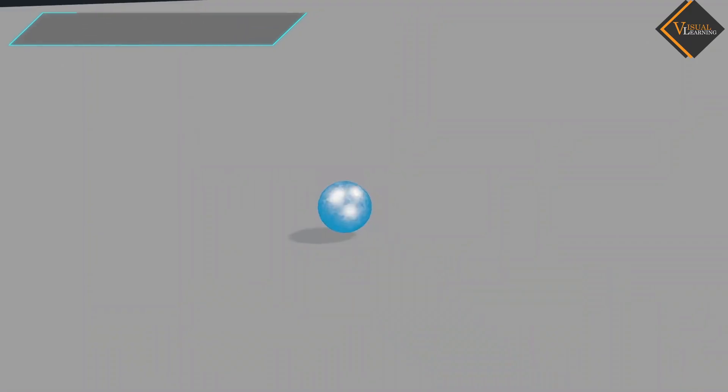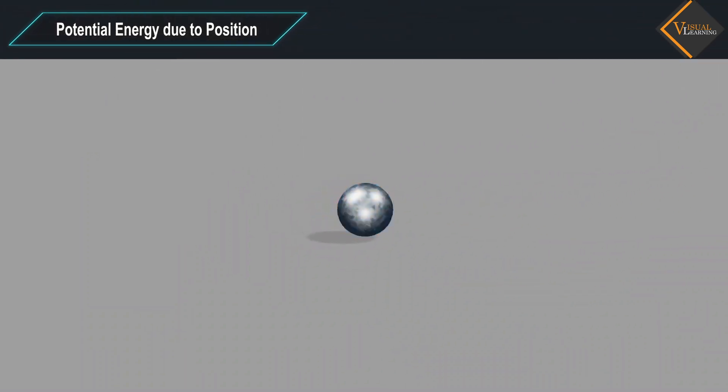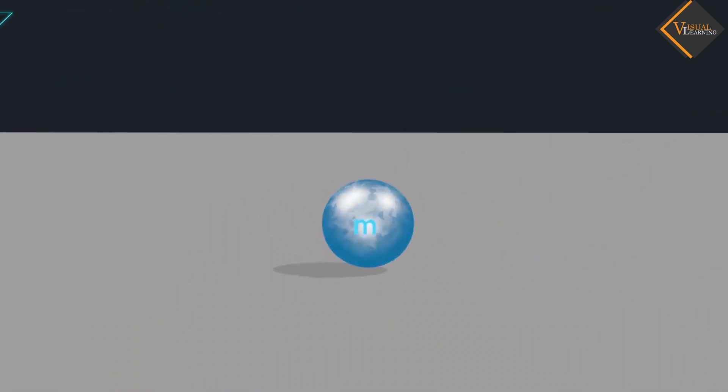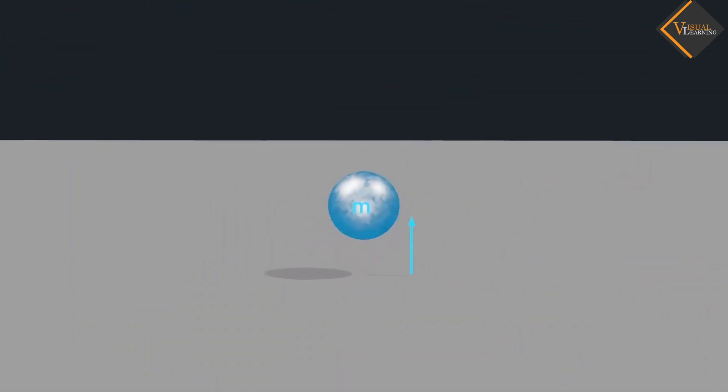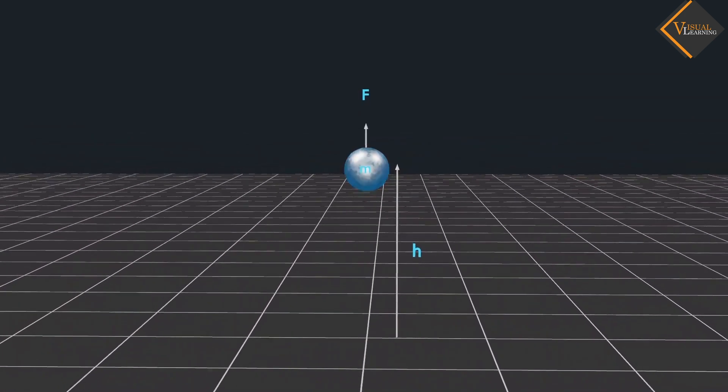Now, let's understand potential energy due to position of the object. Consider an object of mass M. Let it be raised through a height H from the ground. A force is required to do this.